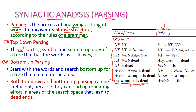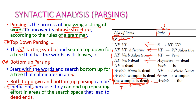In top-down parsing, the words such as 'wumpus is dead' are at the leaves, and the corresponding rule is applied at each step. In bottom-up parsing, parsing starts from the words at the bottom, the corresponding rule is applied at each stage, and finally we reach the starting symbol — if we reach it, the sentence is accepted. Both top-down and bottom-up parsing are inefficient; they can end up repeating effort in the search space, leading to dead ends.